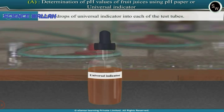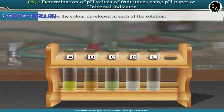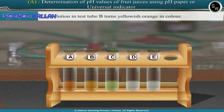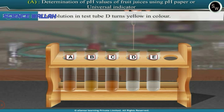Add 2 drops of universal indicator into each of the test tubes. Observe the color developed in each solution. The solution in test tube A turns orange, test tube B turns yellowish orange, test tube C turns orange, test tube D turns yellow, and test tube E turns orange in color.